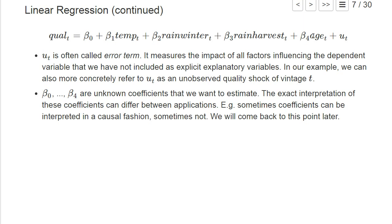For example, there are some different weather factors. Maybe the rainfall in May also plays a role. So all these factors can influence it, so we can also call ut an unobserved quality shock of the vintage t. That's all the other factors that influence the quality which we don't explicitly account for in our regression model.